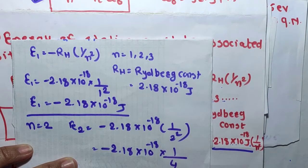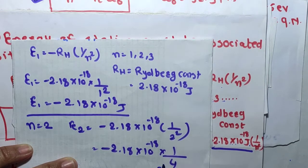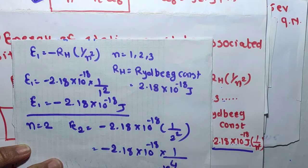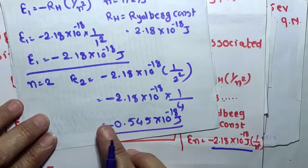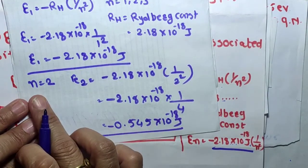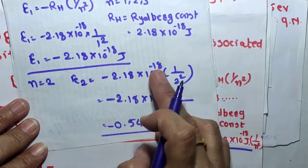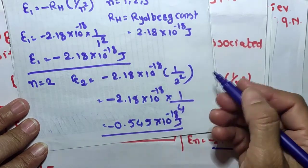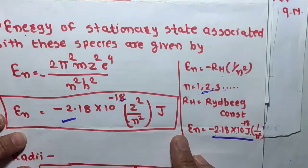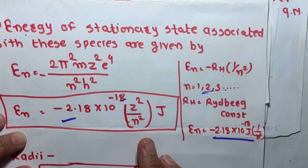Dividing, E2 = 0.545 × 10⁻¹⁸ J. For E3, we put n = 3, so (1/3²) is substituted into the formula.